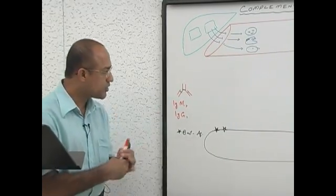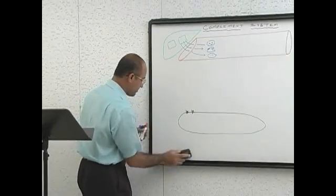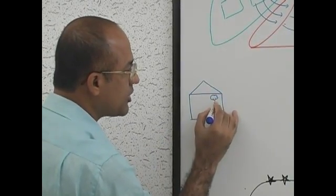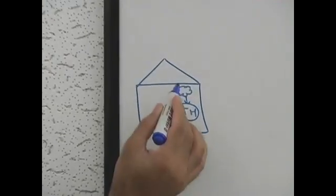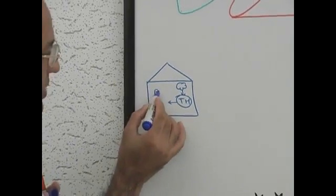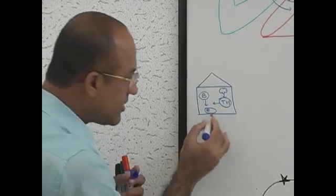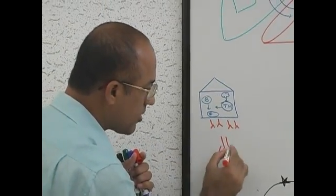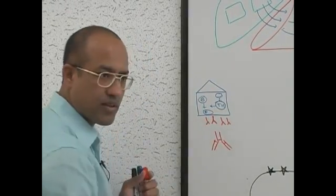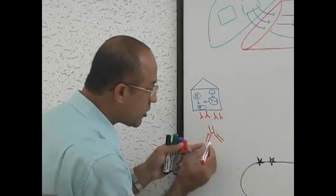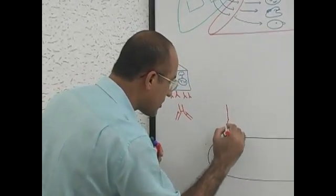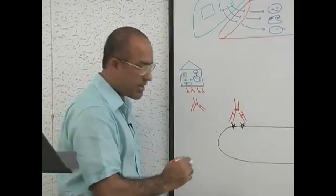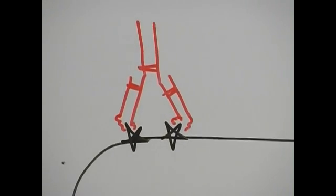Once the immune system has produced these antibodies, macrophages present the antigen to T helper cells, and T helper cells convert the B cells into plasma cells. These plasma cells secrete antibodies. The antibody — a tetrapeptide — is produced against these antigens. Eventually this antibody will reach the bacterium and react with the antigen — the antibody binds with the target antigen.